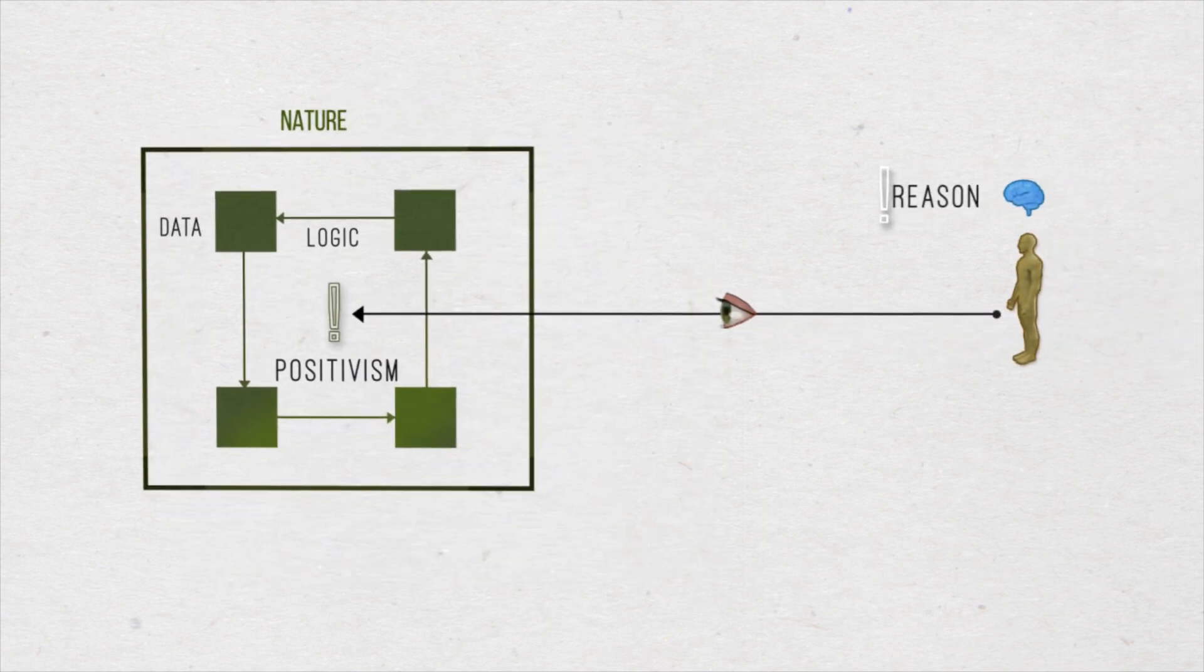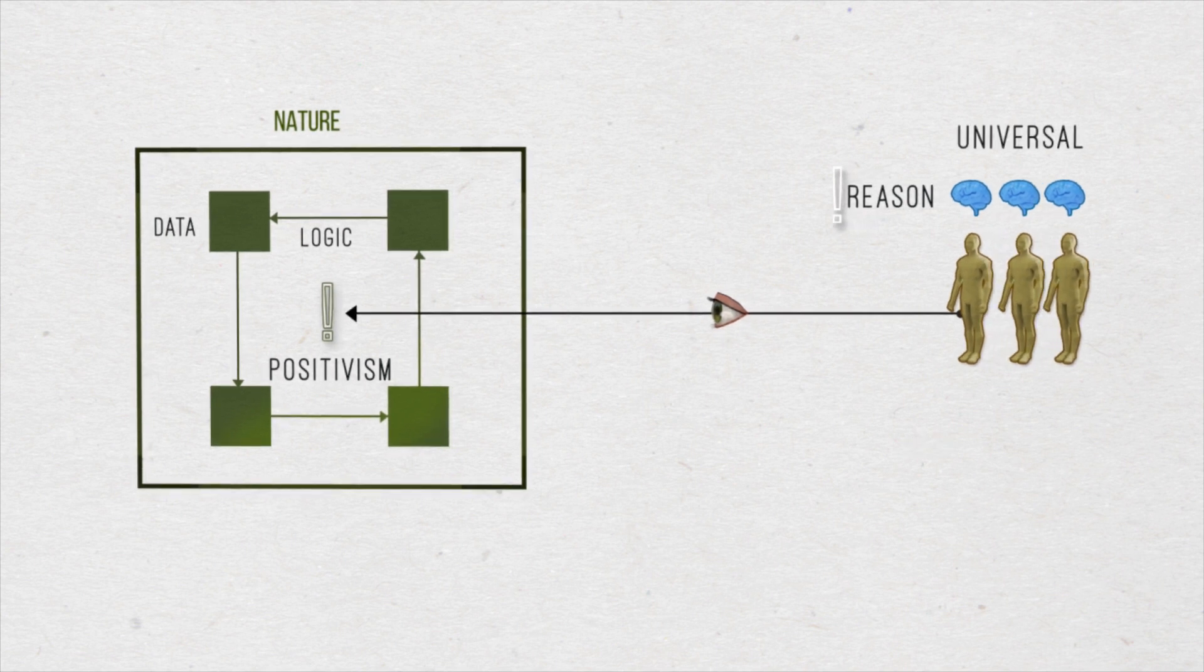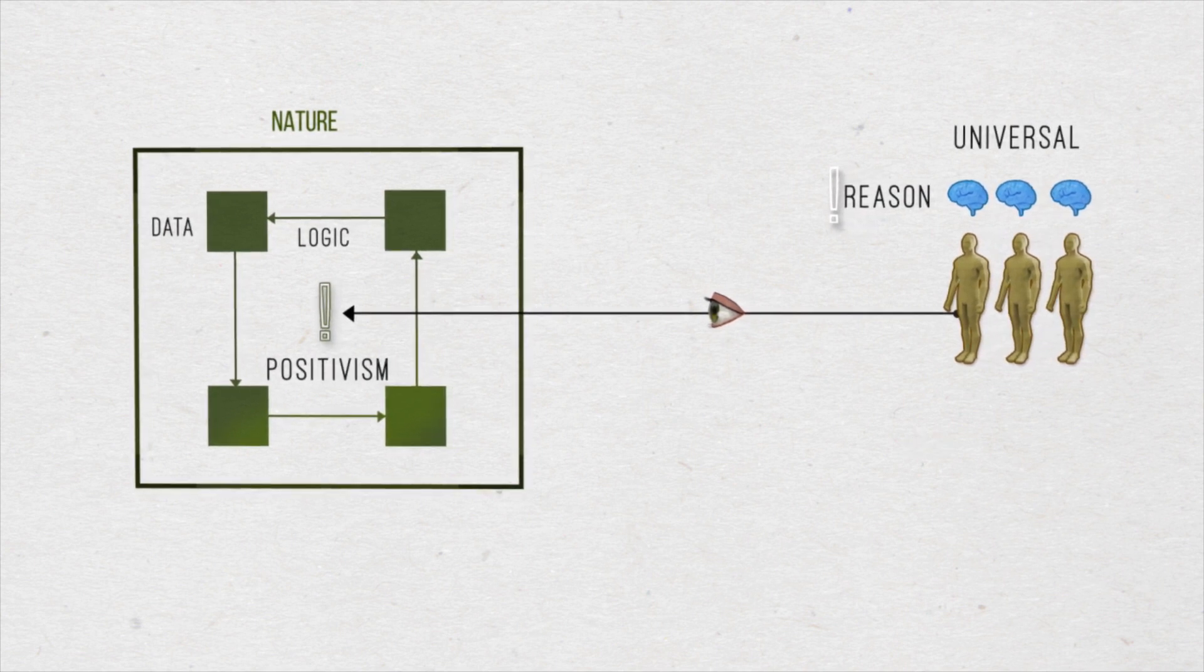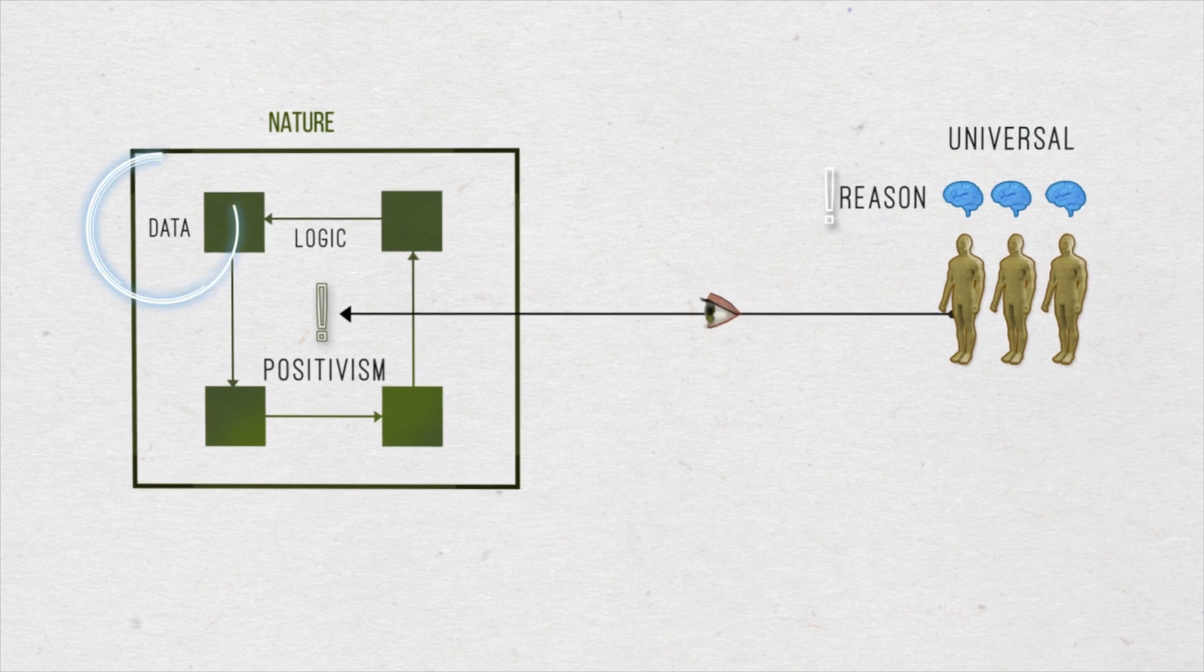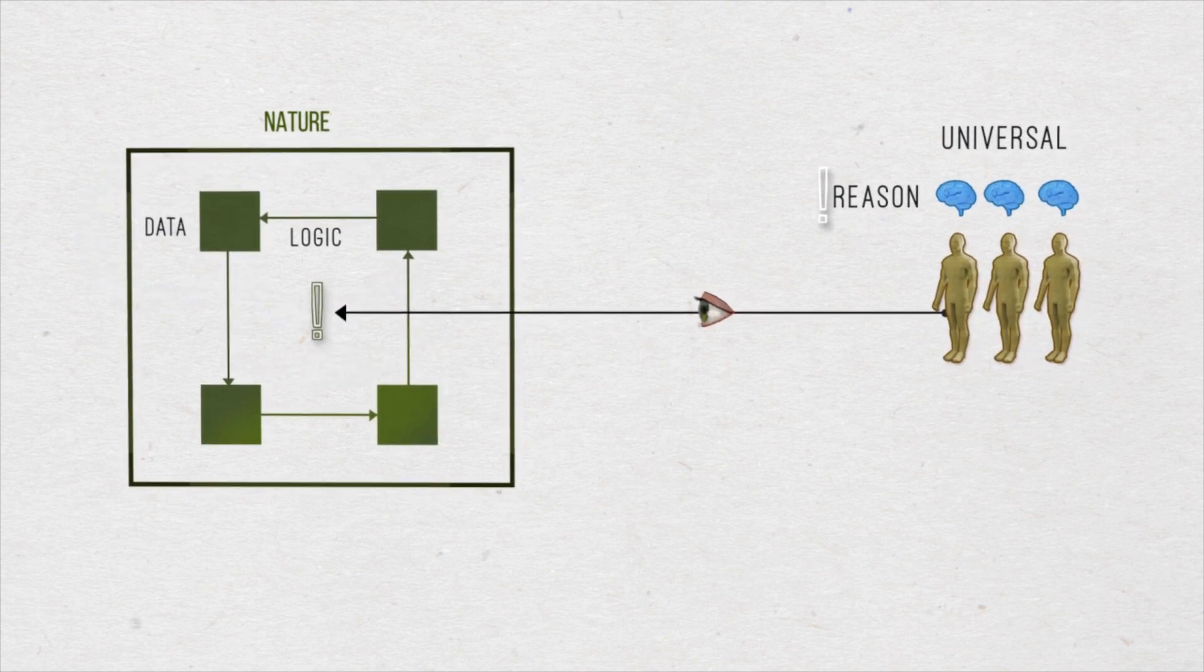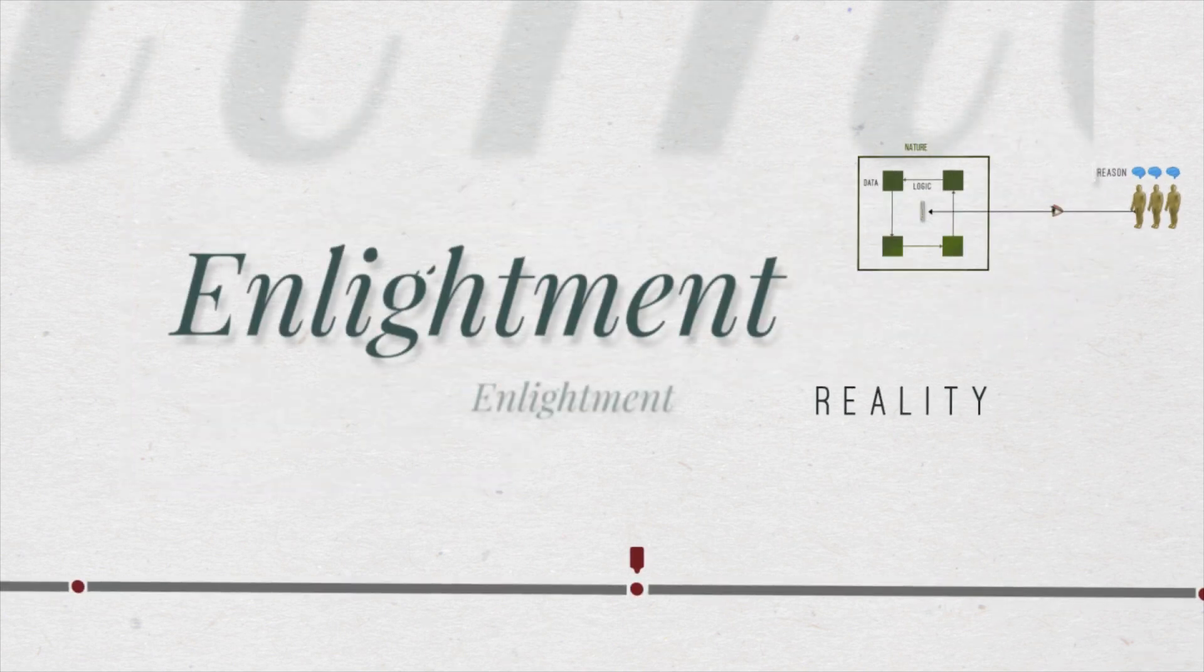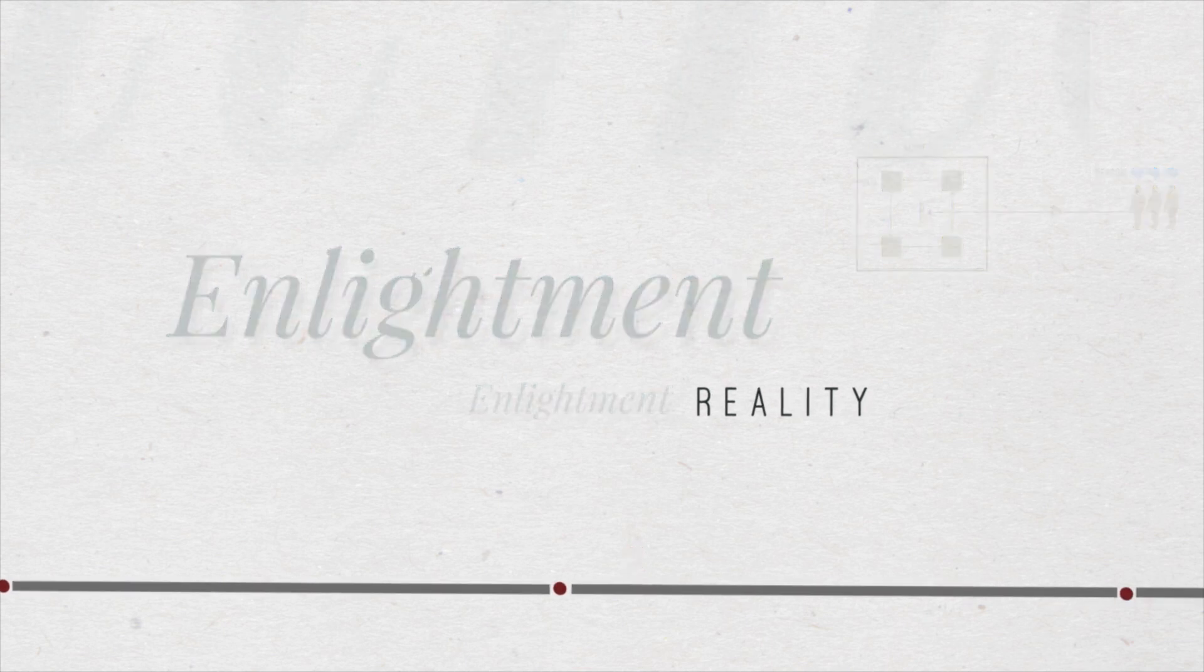In fact, for the Enlightenment mindset, any human being, using reason, seen as universal, would infallibly define nature in a same given and logically knowable way. Clearly, a stance of rationalist foundationalism. This was reality for Enlightenment modernism.